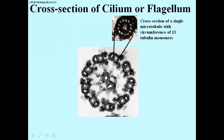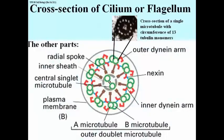There are doublet microtubules, and if you count them, there are nine of them in the circumference of this cilium or flagellum. There are two single microtubules in the middle, and then there's all this fuzzy stuff. These fuzzy things have different structures, and I can illustrate them better looking at the cartoon.